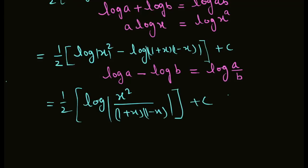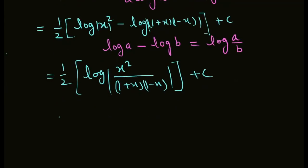This gives 1 upon 2 log[x squared upon (1 minus x squared)] plus C. This is the answer to this question.